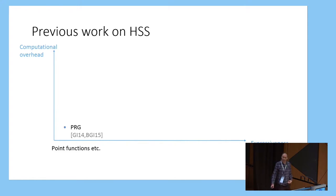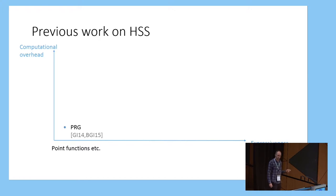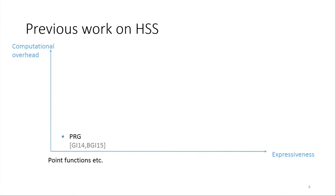The first line of work in this field goes back to 2014, when Gabor and Ishai showed how to get this for simple classes of functions, including point functions and interval functions, using only a pseudorandom number generator. These constructions are also very efficient computationally and have a nice low overhead.